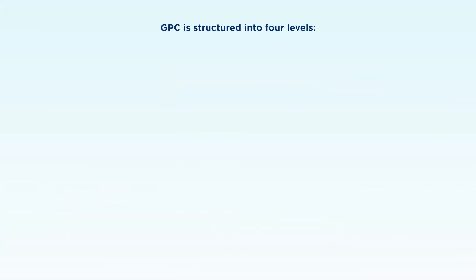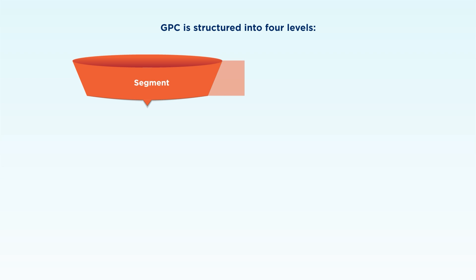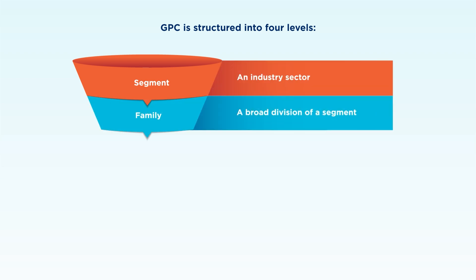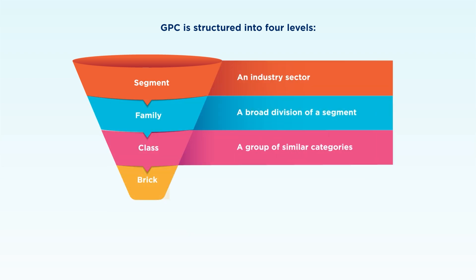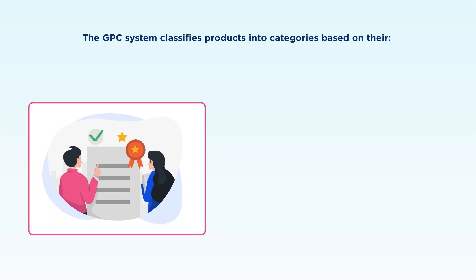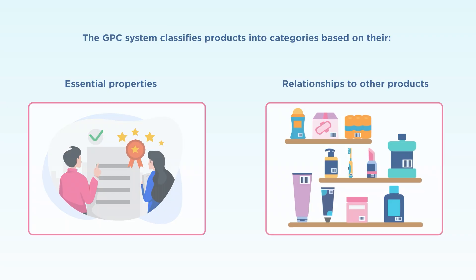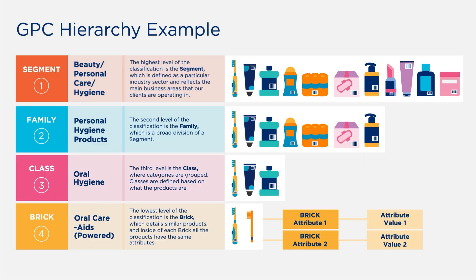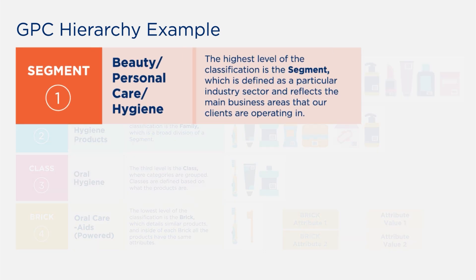GPC is structured into four levels: segment, family, class, and brick. Each level provides more specific details about the product's characteristics. The GPC taxonomy classifies products into categories based on their essential properties and relationships to other products. It's structured into a hierarchy that starts with the broadest category, the segment, which indicates the industry to which a product belongs.